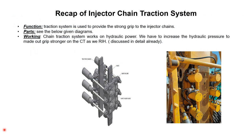This tutorial is in continuation with our previous tutorial on the chain traction system, so we will recap what we discussed previously. The function of the chain traction system is to provide a strong grip to the injector chains while running in hole or pulling out of hole. The main parts include three pairs of hydraulic cylinders, two scat plates, scat holders, and scat holder guides.